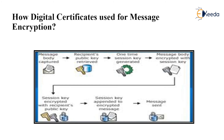How does a digital certificate work for message encryption? The process is: the message body is captured, the recipient's public key is retrieved, a one-time session key is generated, and the message body is encrypted with that session key. The session key is then encrypted with the recipient's public key, appended to the encrypted message, and sent. This appendment of the session key with the message provides the digital certificate functionality.